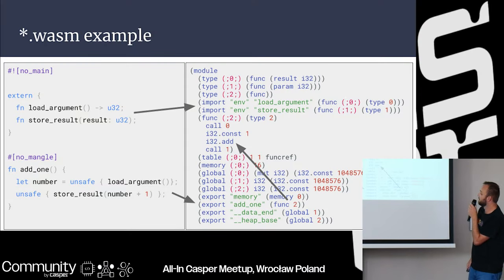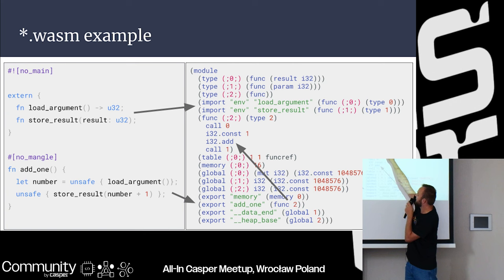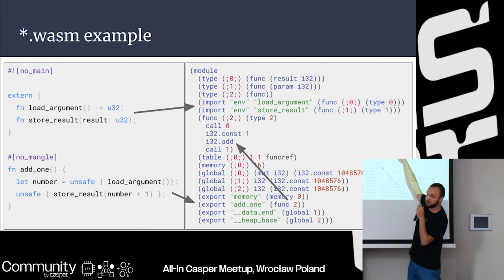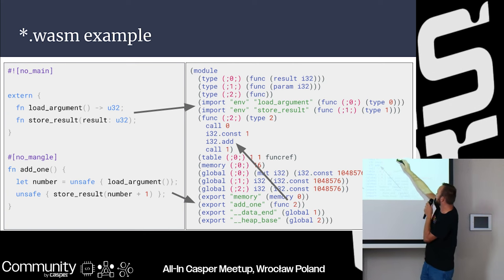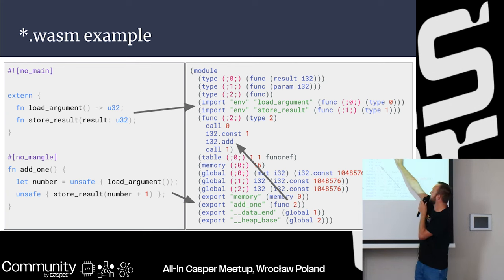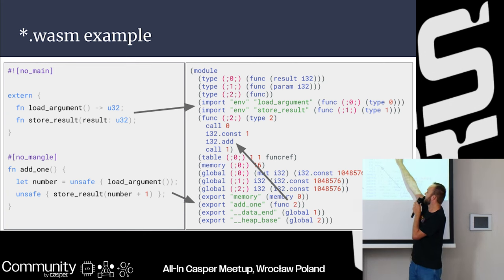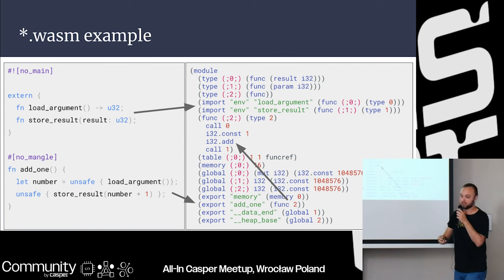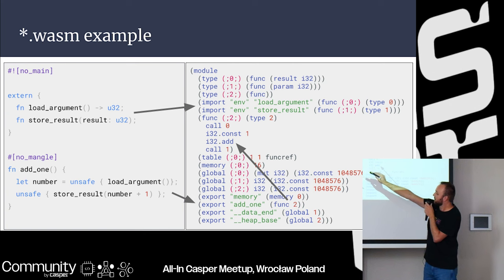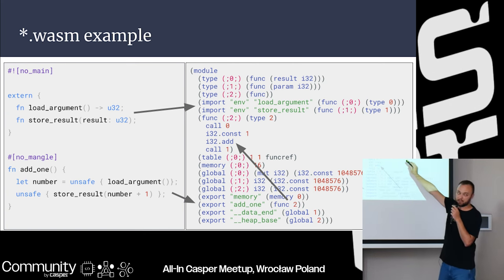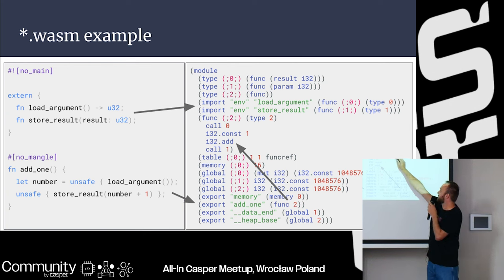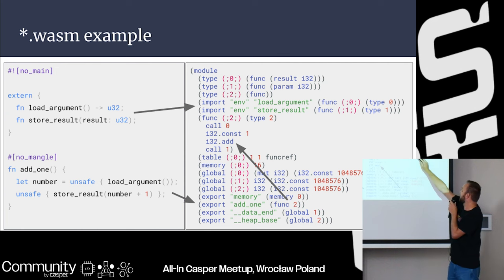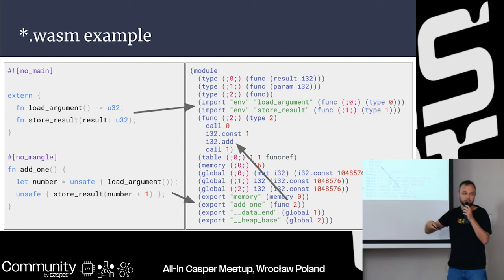Let me walk you through it. Everything in WASM is a module. I have three types defined: a function that results in i32, a function that takes one parameter, and a function that doesn't accept or return a value — it just executes logic. Then load_argument and store_result are defined as imports from the host. There is a function defined with bytecode as stack machine code.